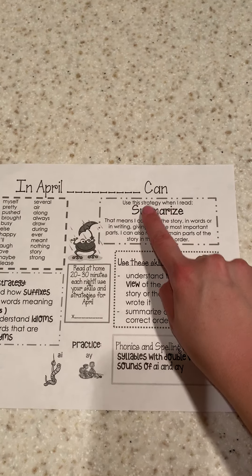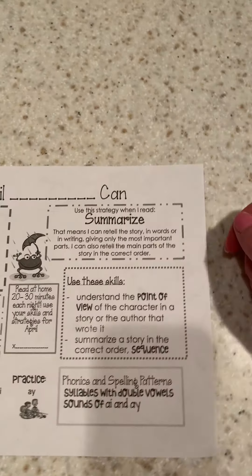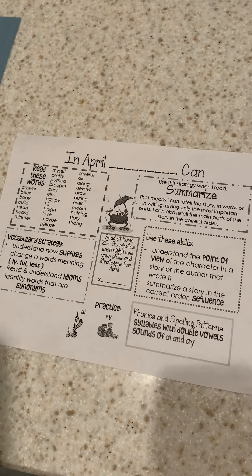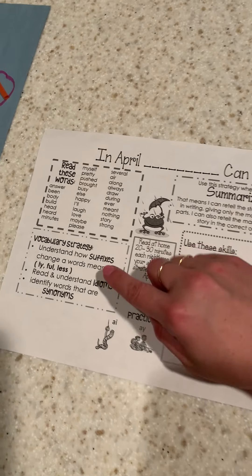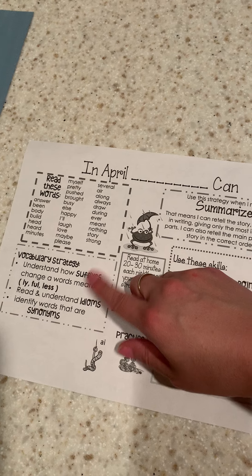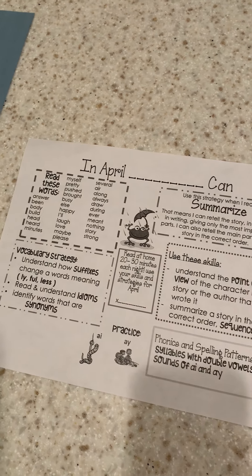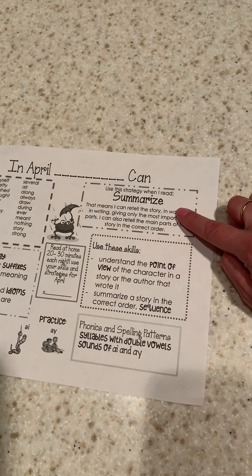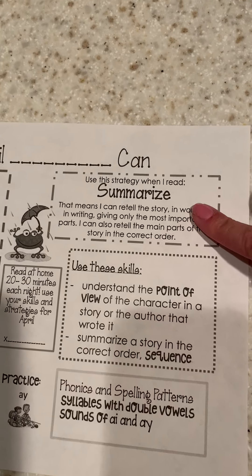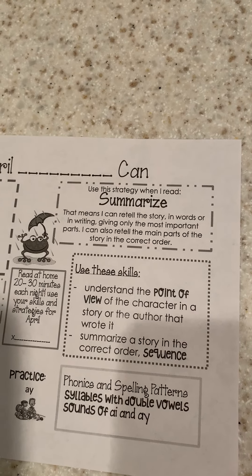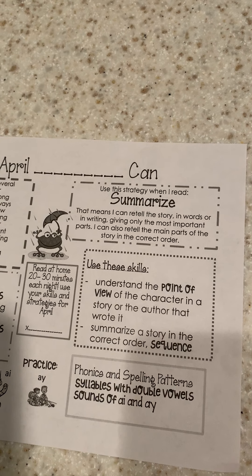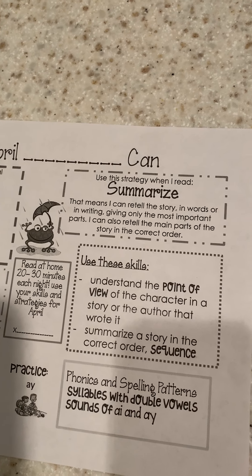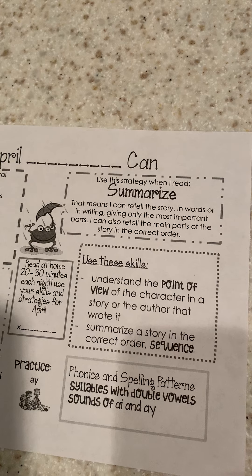Summarizing is our April strategy of the month. So all of our lessons are coming from this April calendar. Mrs. Spadone has been teaching you all of these strategies and she will continue that. And I will be showing you this strategy up here, which is summarize. It says that means I can retell a story in words or in writing, giving only the most important parts.